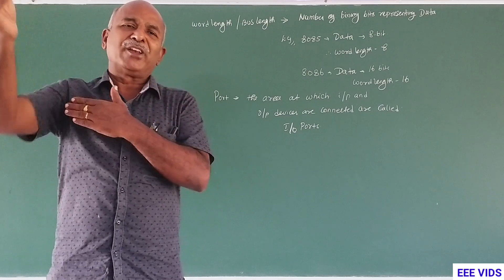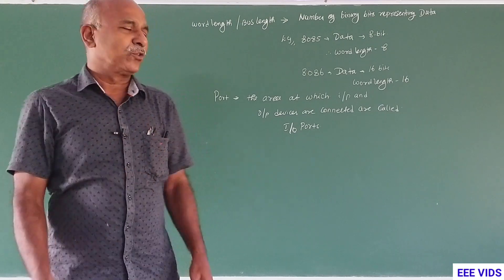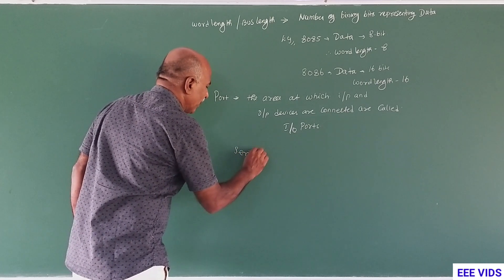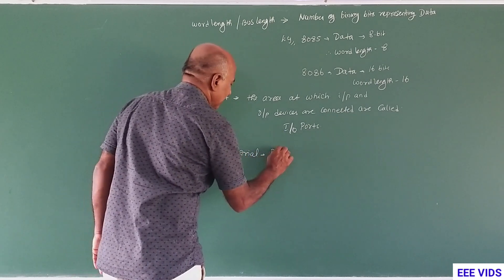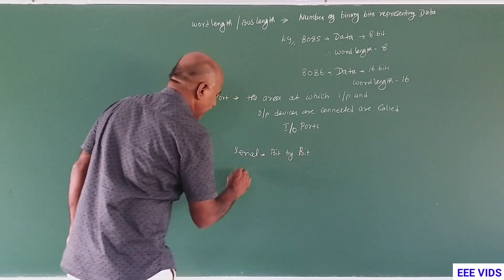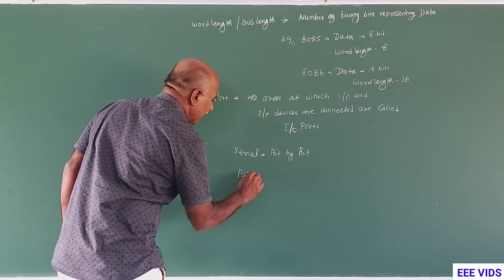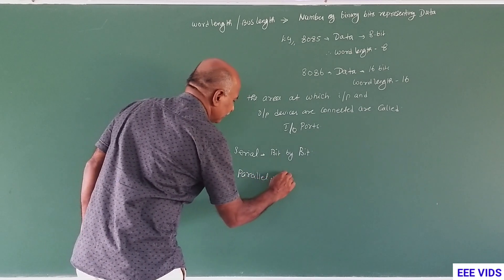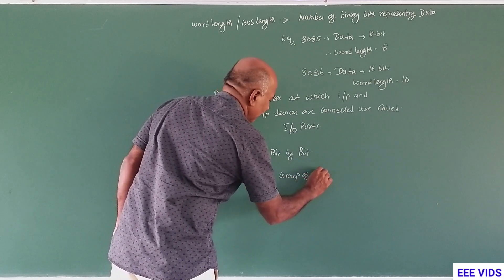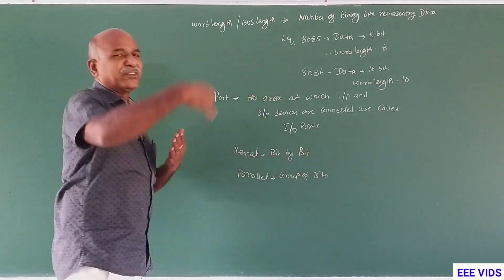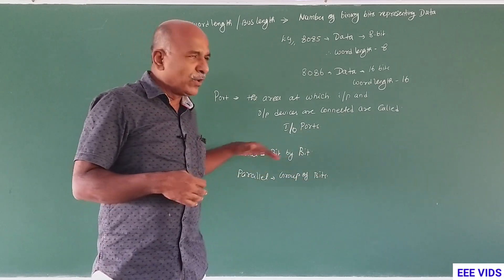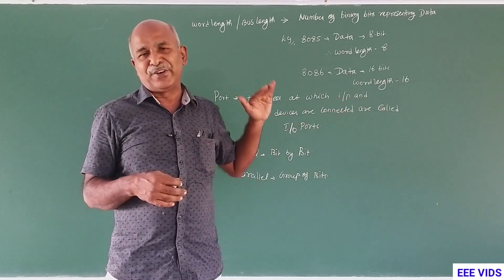A group of bits is a parallel operation. Serial is bit by bit — single bit, operating bit by bit. Parallel is a group of bits — that is parallel operation, operating over a group of bits.